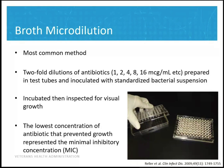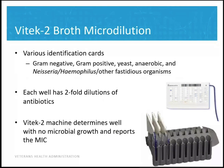As you can predict, broth microdilution is very time- and labor-intensive. Over at the VA, we use the VITEK-2 machine, which automates the whole process. Instead of separate test tubes, there are different wells on identification cards — gram-negative cards, gram-positive cards, etc. — each with a different two-fold dilution of antibiotics. The VITEK-2 machine reads the growth for you and reports out the MIC, saving time and money.